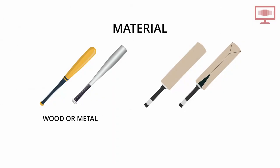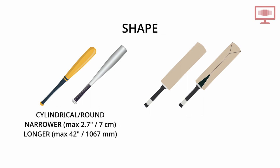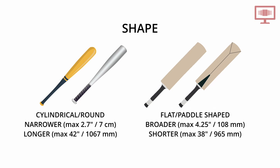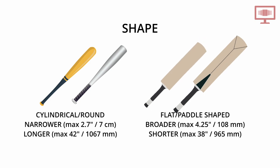A baseball bat is a smooth wooden or metal club, whereas a cricket bat is always made of willow wood — typically English or Indian Kashmiri willow. A baseball bat is almost cylindrical in shape with a thin handle and is much narrower and longer than a cricket bat, which is flat and has two sides. The front side is flat and used to strike the ball, whereas the back side has a ridge.